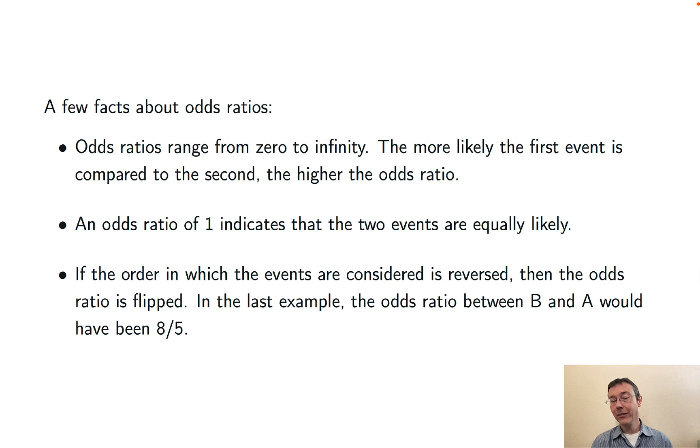So in that last example, the odds ratio between A and B was five-eighths. The odds ratio between B and A would be eight-fifths.